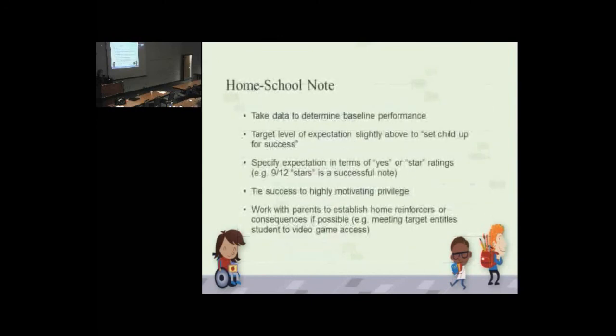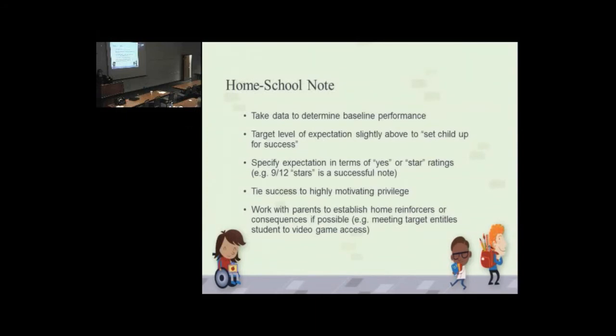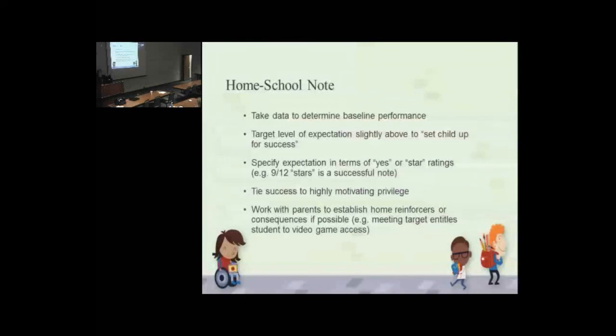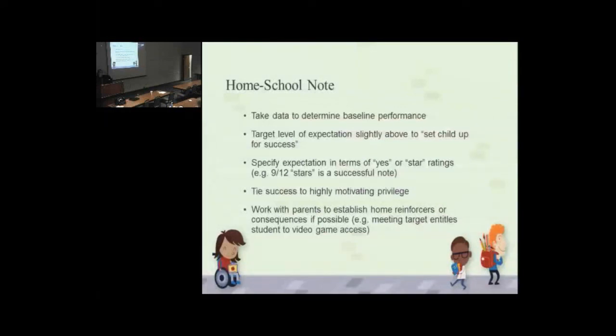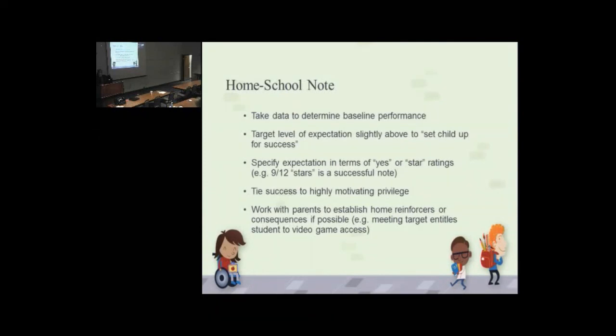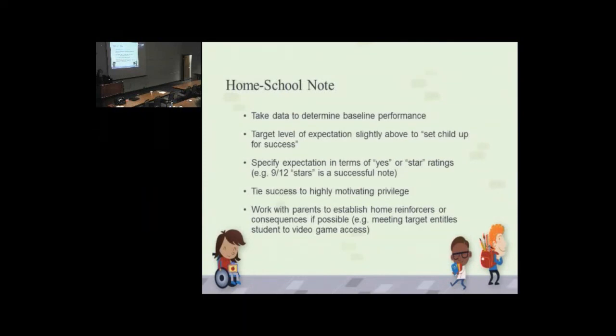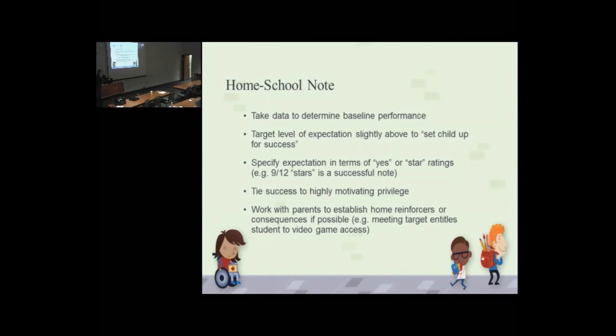Before you do a homeschool note, you should always take data to determine baseline performance and then target the initial level of expectation just slightly above. Because you always want to set kids up to be successful and then build from there. So you don't want to shoot for 90% compliance or 80% compliance, you want to build. Specify expectation in terms of yes or stars and specify how many it takes. So if you have 9 out of 12 stars, it's a successful note.